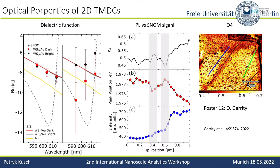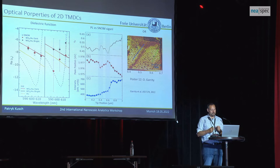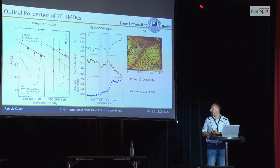So there is a correlation between PL peak position and SNOM amplitude. The reason is related to the dielectric function in the amplitude signal. When we dope the sample — and on gold we have a lot of doping — we modify its optical properties and shift the dielectric function. The band gap also slightly changes, and this you observe in the PL as well. So we have a correlation between tip-enhanced PL and SNOM itself.